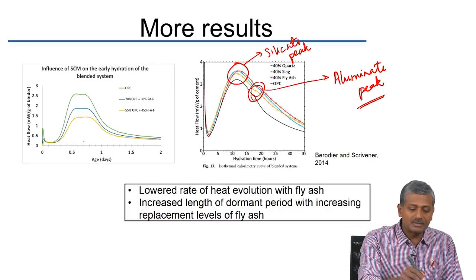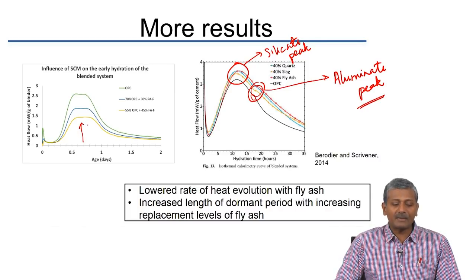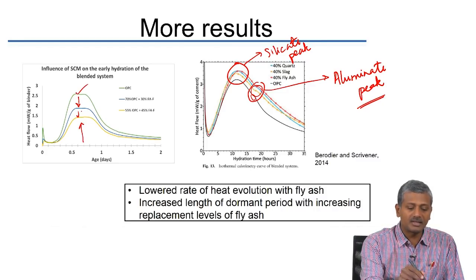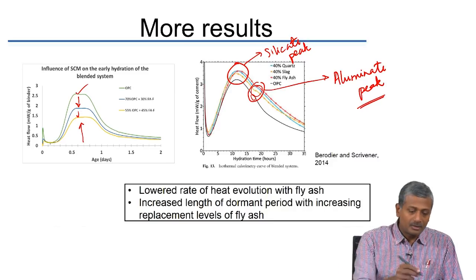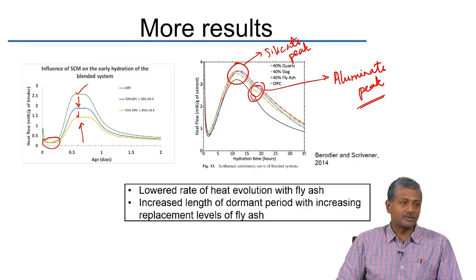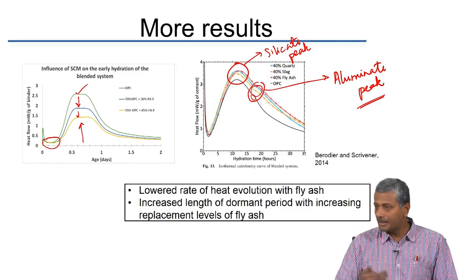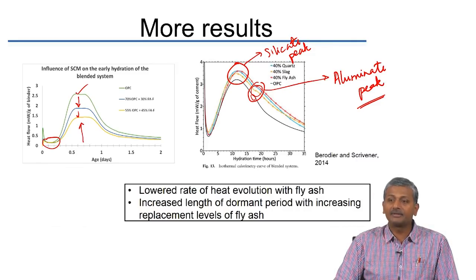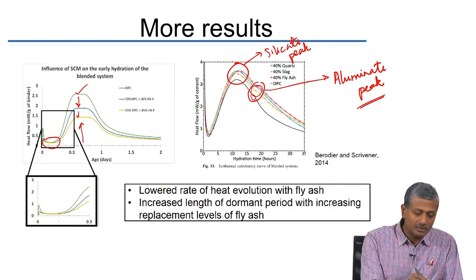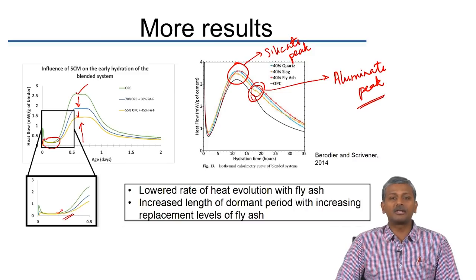The heat evolution pattern showing the effect of type F fly ash replacement shows that compared to OPC at the top, the peak heat rate is significantly reduced. The dormant period duration is also increased when fly ash is used as a cement replacement, meaning it takes more time for the cement to set. A magnified view shows that the kickoff of hydration happens much faster for OPC and slower when fly ash is used.